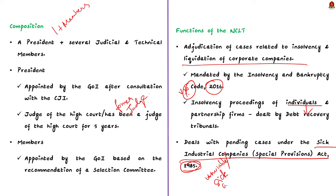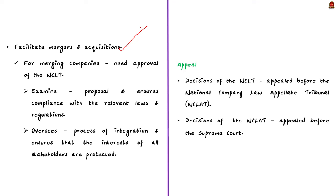Finally, NCLT plays a crucial role in facilitating mergers and acquisitions. When two or more companies wish to merge, they must seek NCLT's approval. The tribunal examines the proposal and ensures compliance with relevant laws. If the merger is approved, NCLT oversees the integration process and protects the interests of all stakeholders. If anyone is aggrieved by NCLT's decision, they can appeal before the National Company Law Appellate Tribunal (NCLAT), and the NCLAT's decision can be further appealed to the Supreme Court.